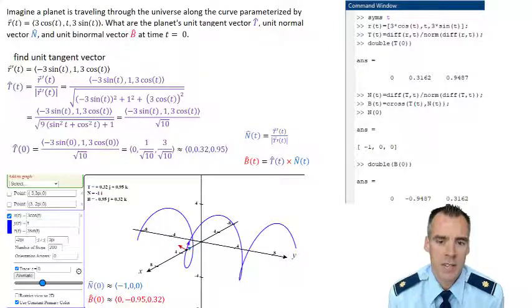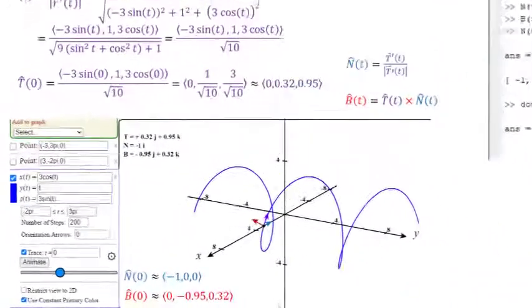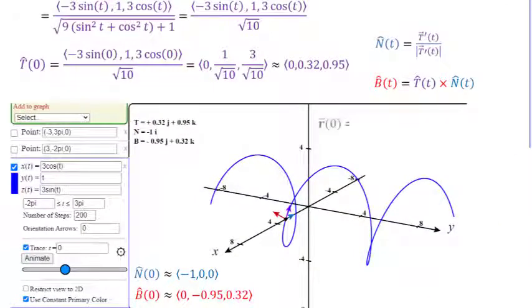Let's double check this to make sure that makes sense on our plot. At T equals 0, we should be at the point 3 cosine of 0, 0, and 3 sine of 0, which is 3, 0, 0. If we change T equal to 0, we see that our position function does actually give us that coordinate. So we're good so far.